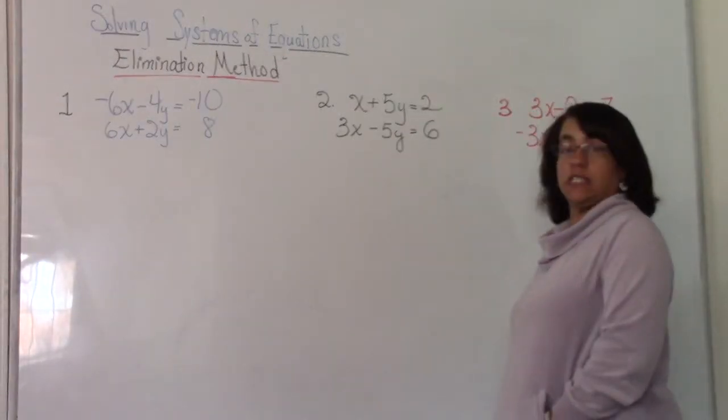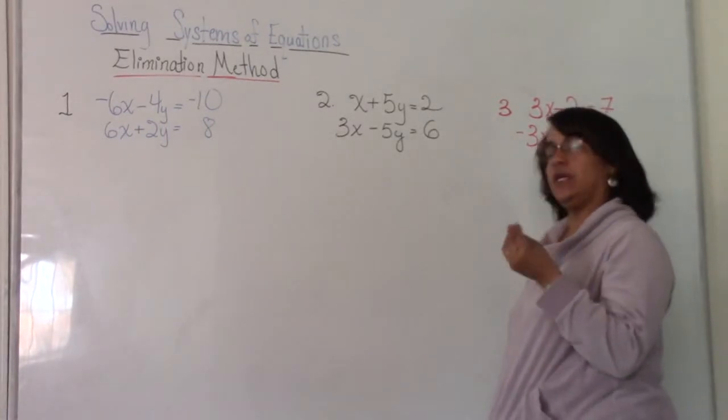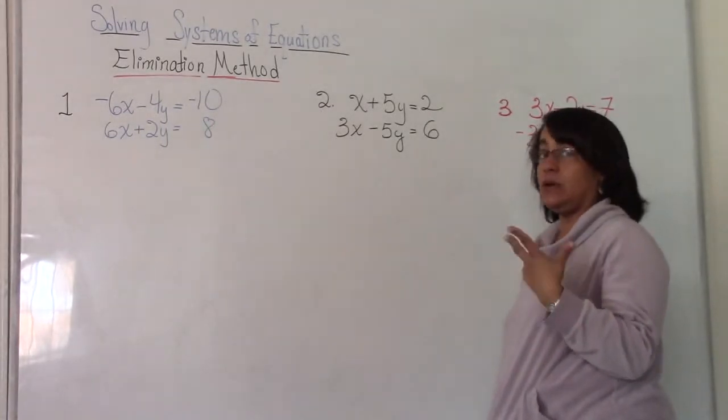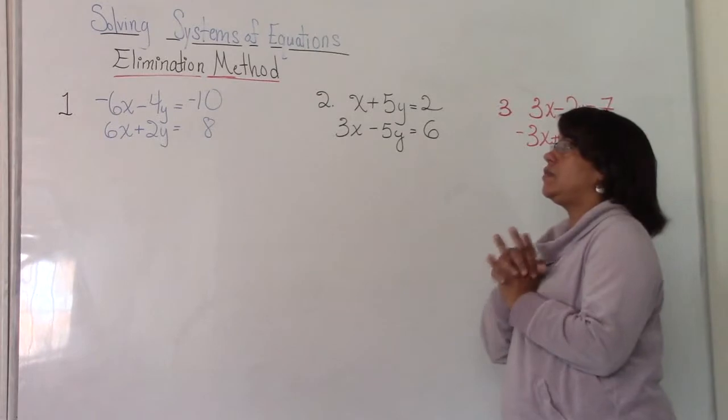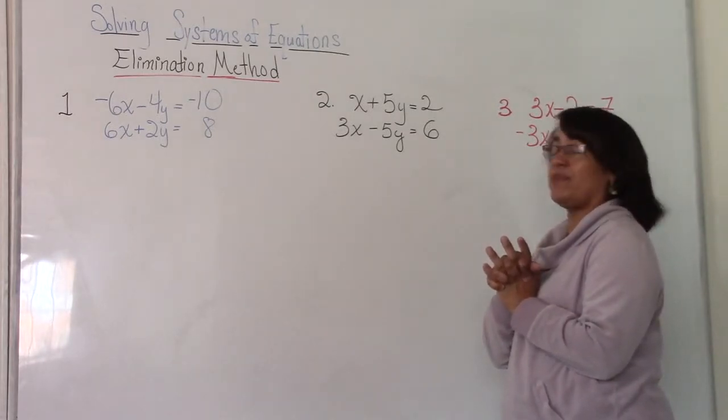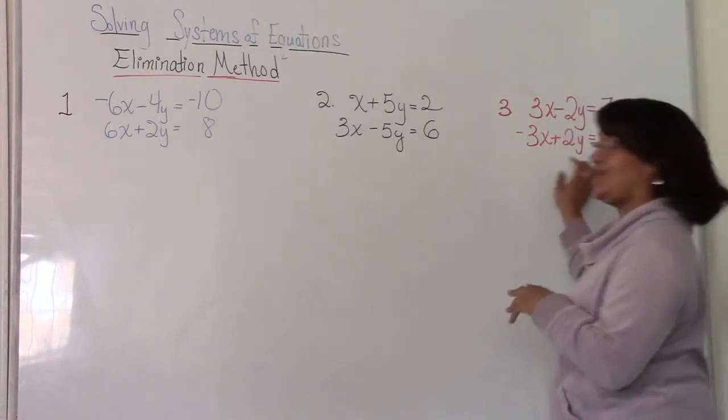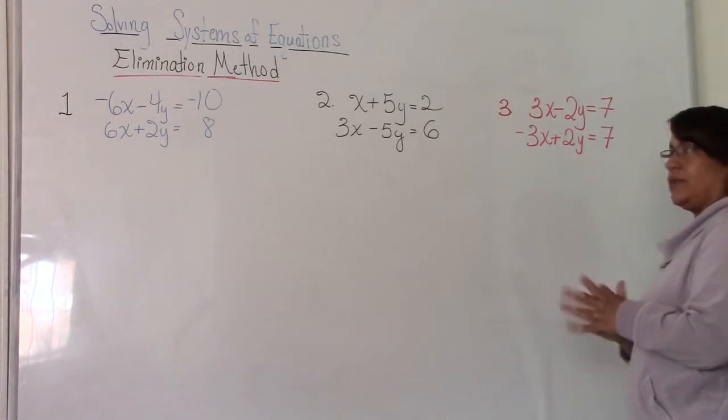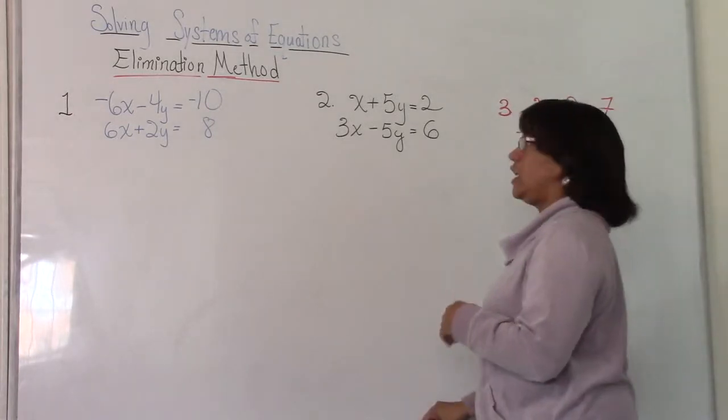In order to solve using elimination, you need to have at least one pair of variables that are opposites. And you only really want one pair of variables to be opposites, because if you do have both pairs opposites, you'll see what happens in number three. Okay, so let's look at number one.